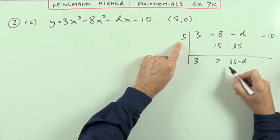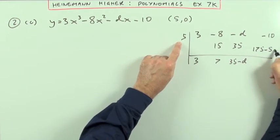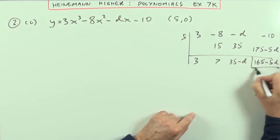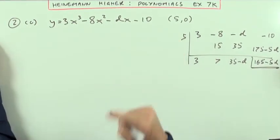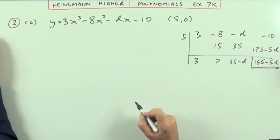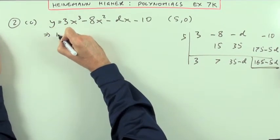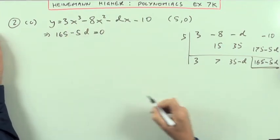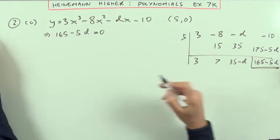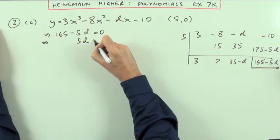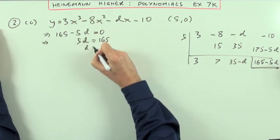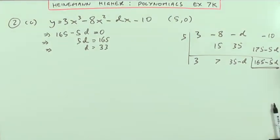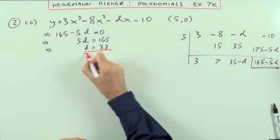175 minus 5d, add it down, 165 minus 5d. Then I know, since 5 is a root, x minus 5 is a factor, that should come to 0, so I'll just make that statement just now. If it had been a higher question, perhaps I'd have made a statement about that being the remainder on division, etc., which means that 5d is 165, so d is going to be 33. Yeah, that's d done.